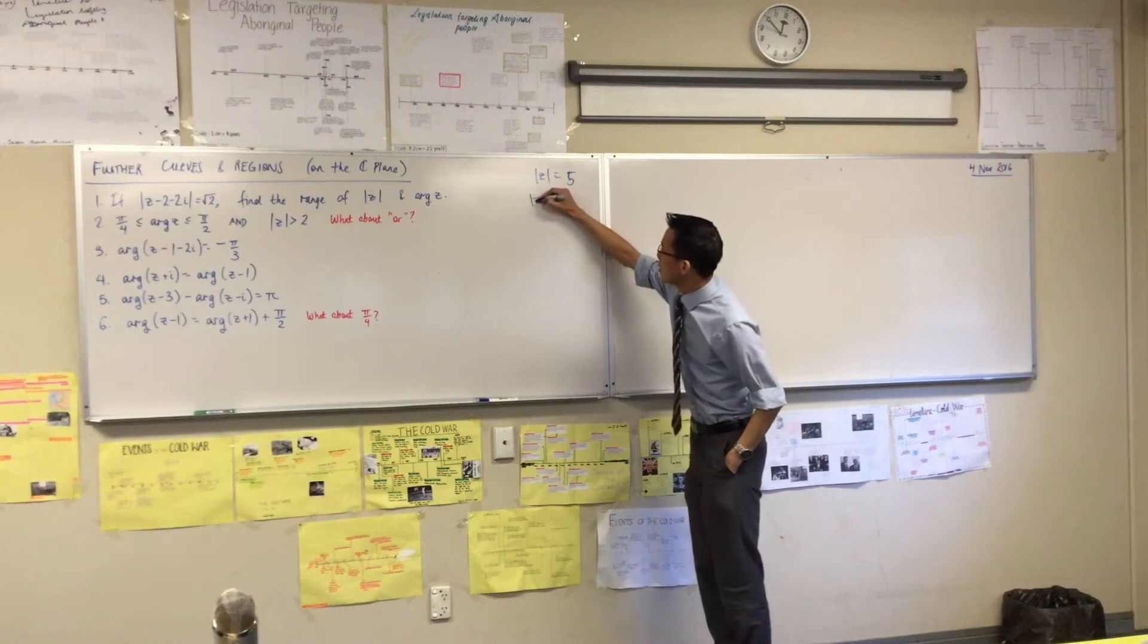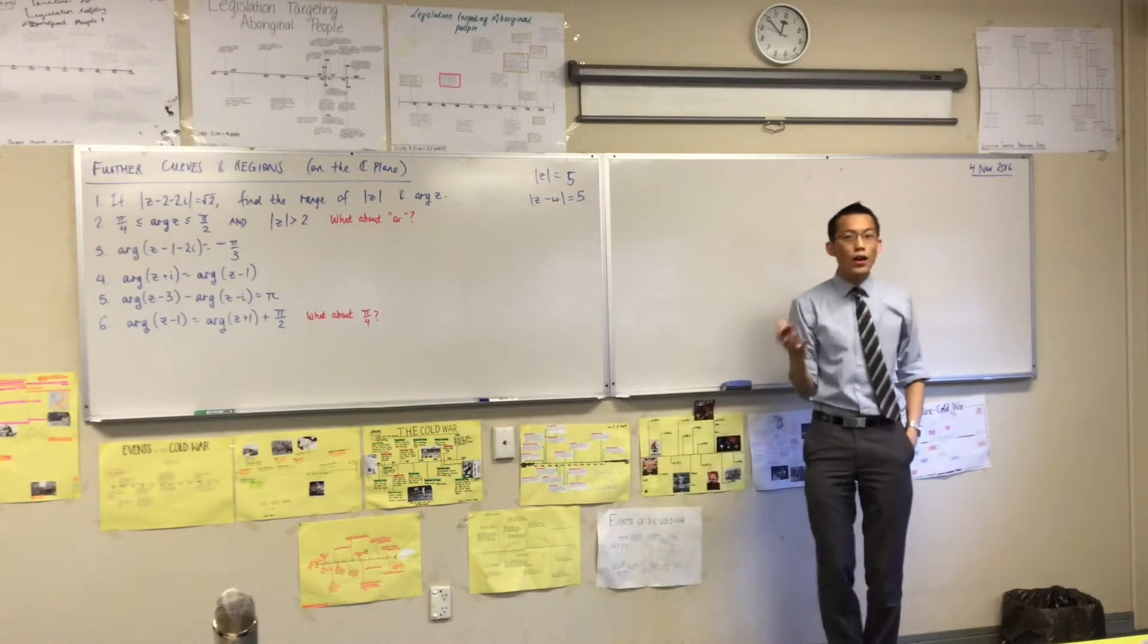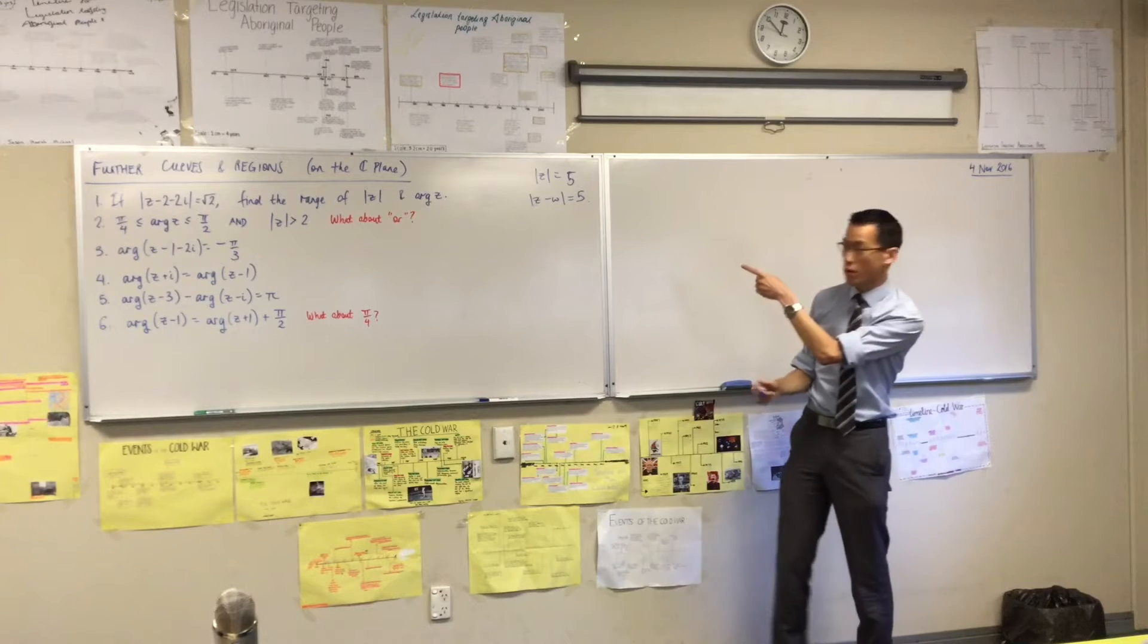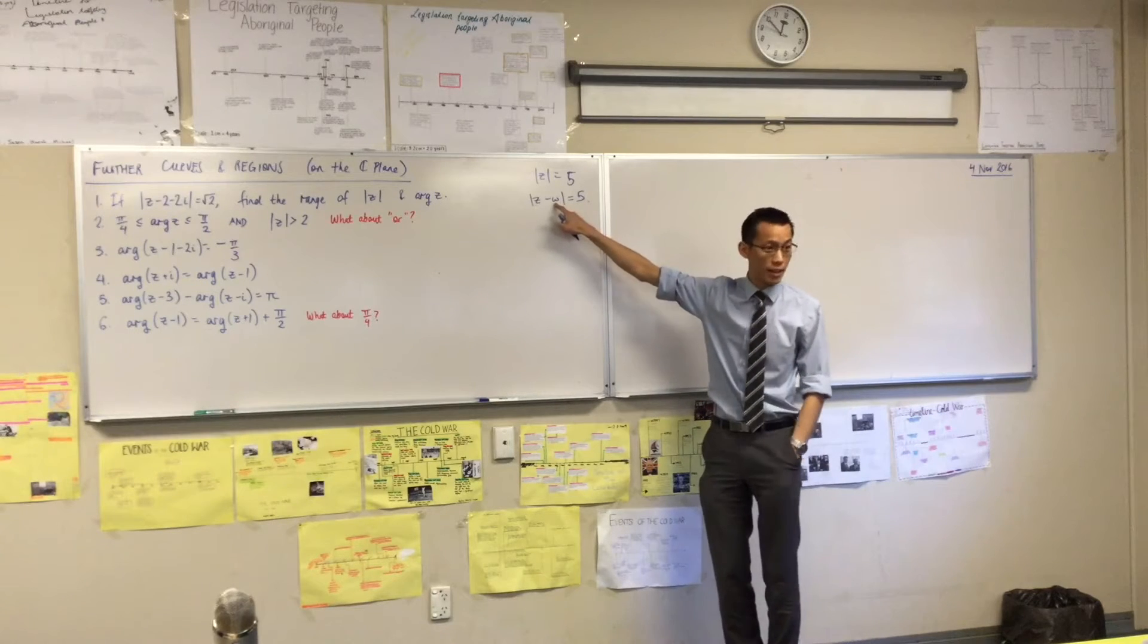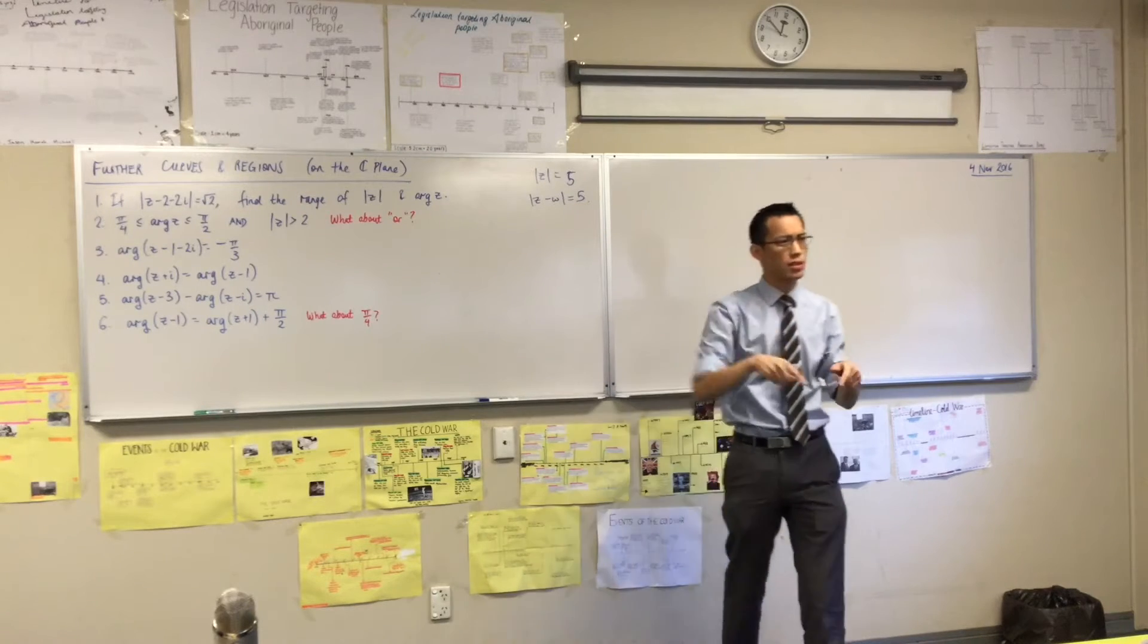And then we extended that just a teeny little bit, and we said, well, if you introduce, if you throw an extra, like a number in here, another complex number, you're still measuring a distance. You're still measuring distance, but what's the difference?